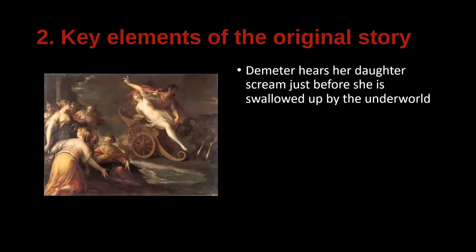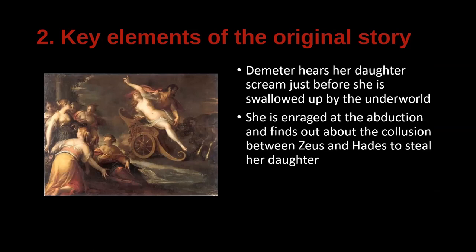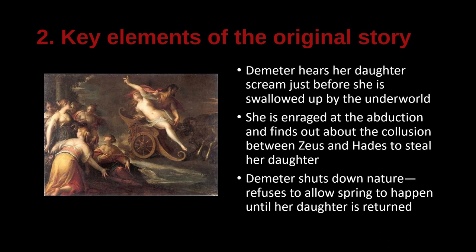Demeter hears her daughter scream just before she's swallowed by the underworld. In some versions, a nymph or mountain god tells Demeter what happened. She discovers the collusion between Zeus and Hades to steal her daughter, and she is enraged — understandably. At that point she withholds her power, essentially saying: no more springtime. If her daughter is not returned, the earth will wither and die. She will not bring back spring, which means no growing season, no harvest, no food. She's exerting her power over the natural world to withhold spring until her daughter is returned. That's a powerful threat.